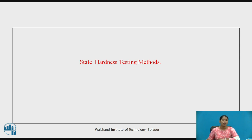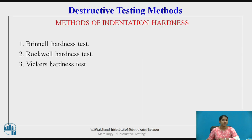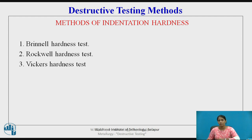Now let us go to the hardness test. Can you name some hardness testing methods? Please pause the video for a few seconds. The hardness testing methods based on indentation hardness are: Brinell's hardness test, Rockwell hardness test, and Vickers hardness test. Apart from these, we have Poldy's hardness test and rebound hardness test. In this video, we are going to learn about these three indentation-based tests.